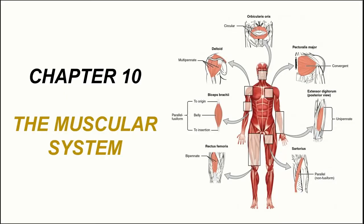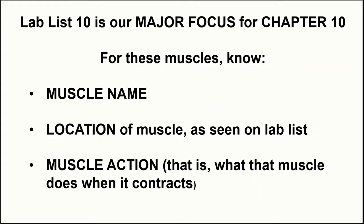The topic of chapter 10 is the muscular system. What the book is implying here is that we'll be learning the names, locations, and actions of specific skeletal muscles within the body. We're not learning all skeletal muscles because there are about 600 or so within the human body, so we're only going to focus on a select few.